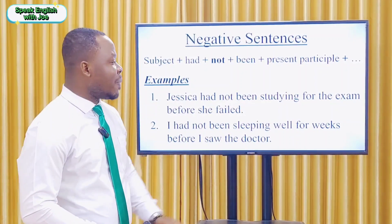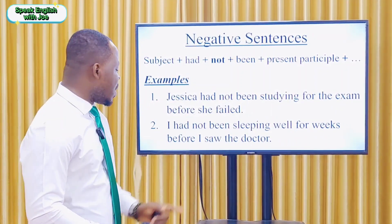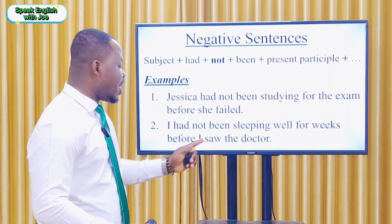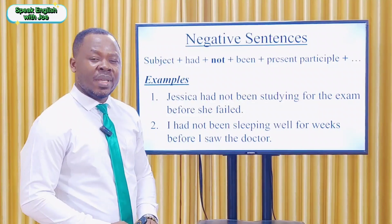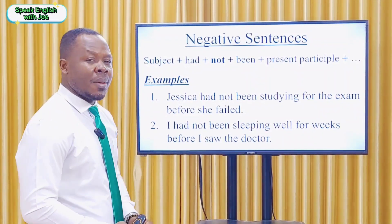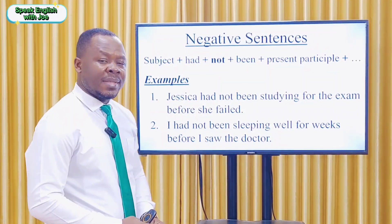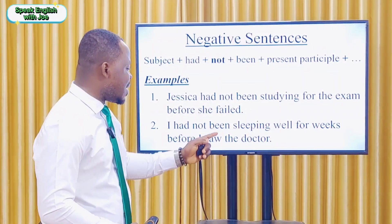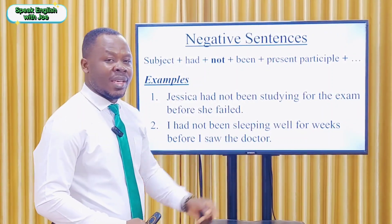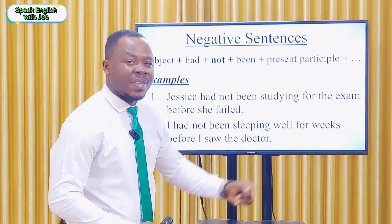Example two: 'I had not been sleeping well for weeks before I saw the doctor.' In this sentence, the subject is 'I', plus the first helping verb 'had', plus 'not', plus the second helping verb 'been', plus the main verb 'sleep' plus -ing (the present participle), and plus the rest of the sentence.